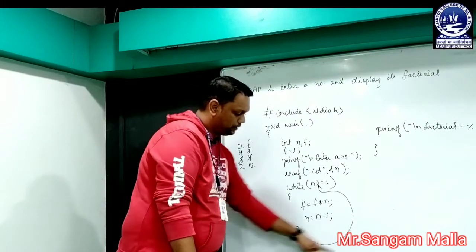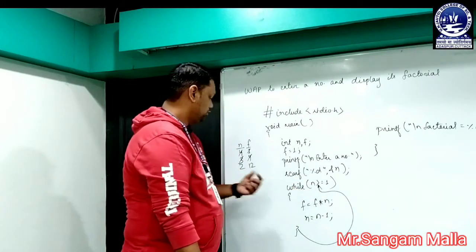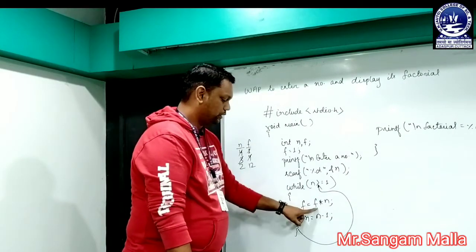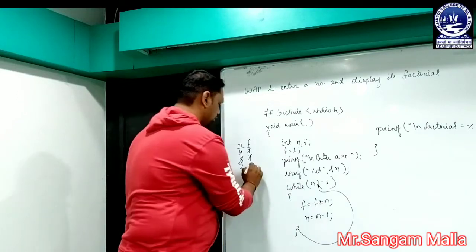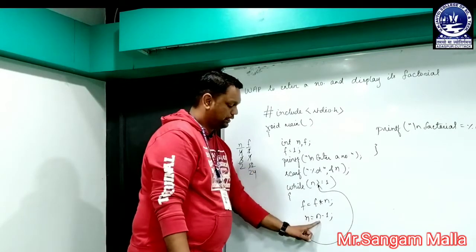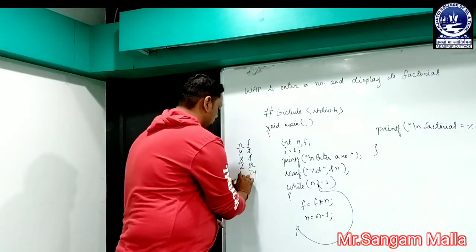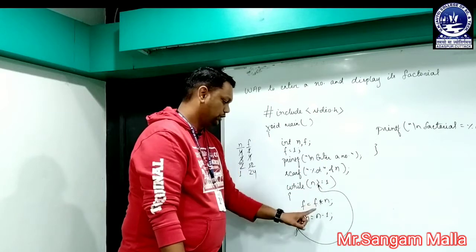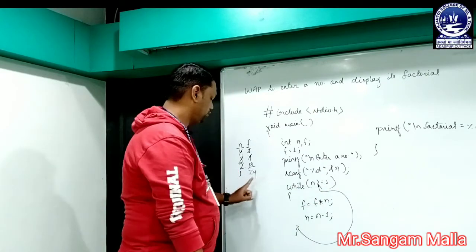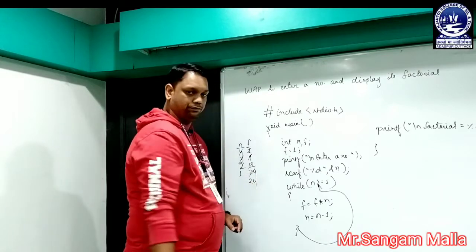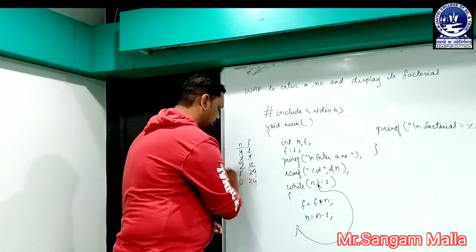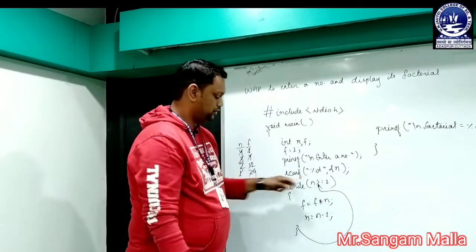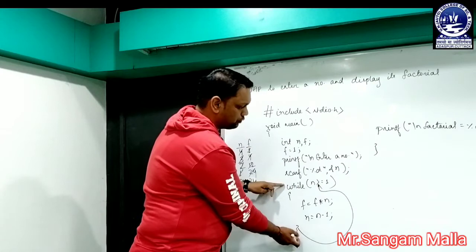When it reaches the closing brace it is redirected to the condition again. n >= 1: 2 >= 1, true — it enters. f = f * n means 12 * 2 = 24. Then n - 1: 2 - 1 = 1. Again redirected: 1 >= 1, true — f = 24 * 1 = 24. Then n = n - 1, n becomes 0. The condition 0 >= 1 is false, so it comes out from the while block.